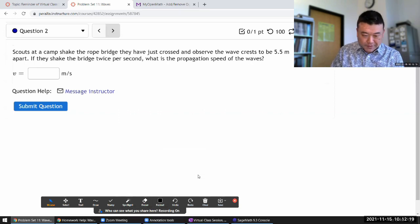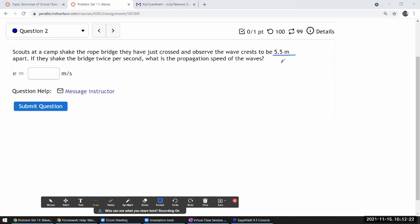Let me just label the information that they're giving us. This is going to be our wavelength. And if they shake the bridge twice per second, they are giving us the frequency of two hertz, twice per second. It's asking what is the propagation speed of the waves.